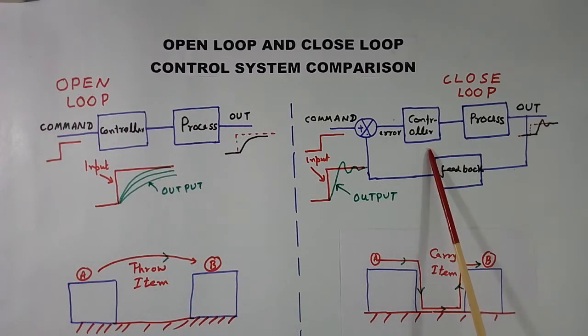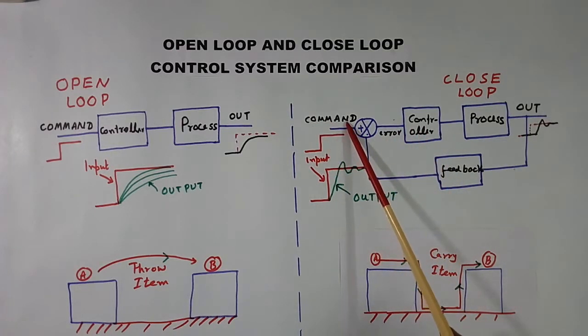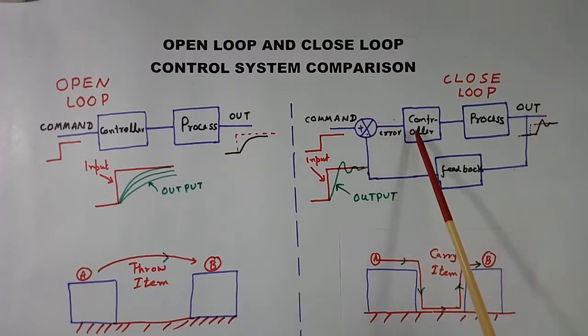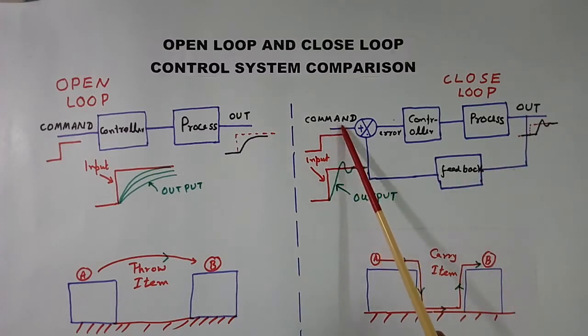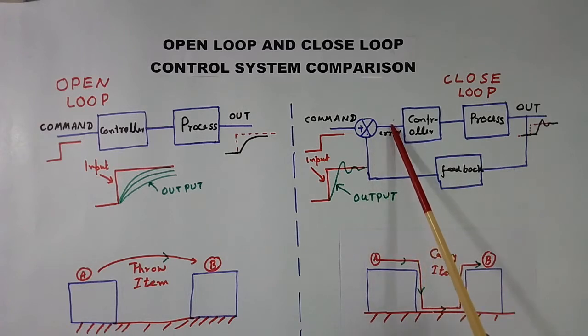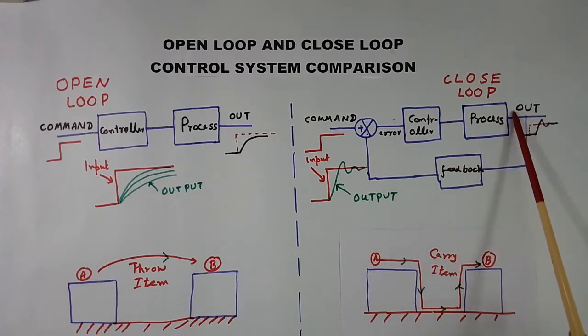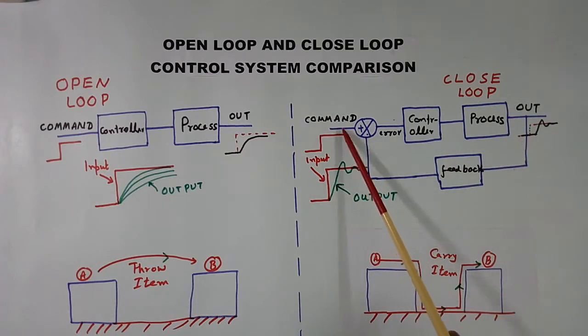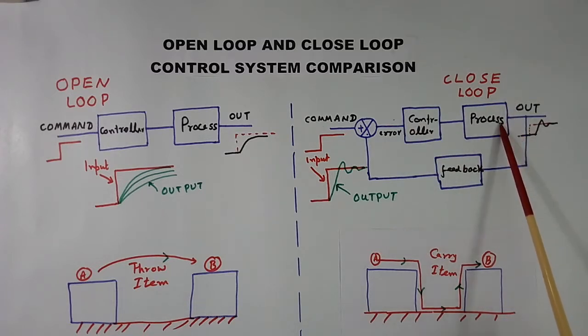In closed loop, there will be a command, there will be an error signal generator, there is a controller, there is a process, and then there will be a feedback. When output and command becomes equal, error becomes zero, and output is stabilized. When output and command are not equal, error will come, and output will increase or decrease, depending upon the requirement.